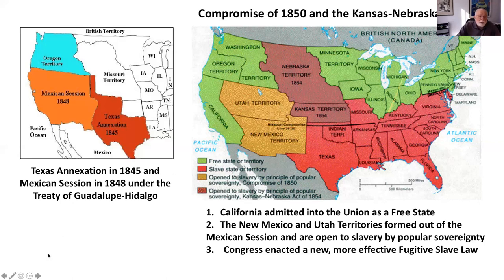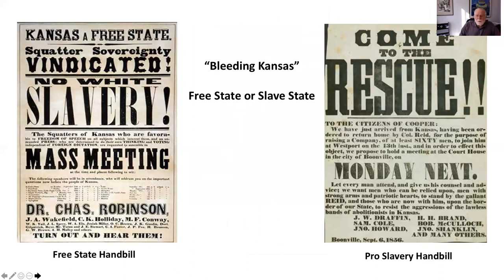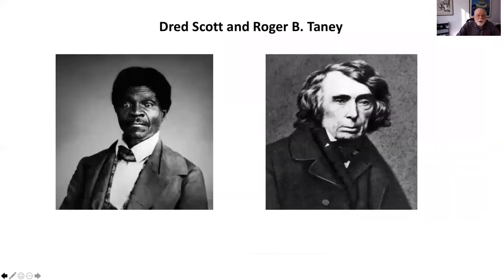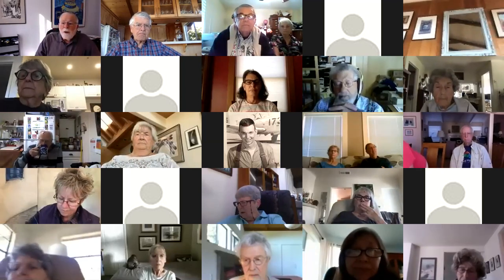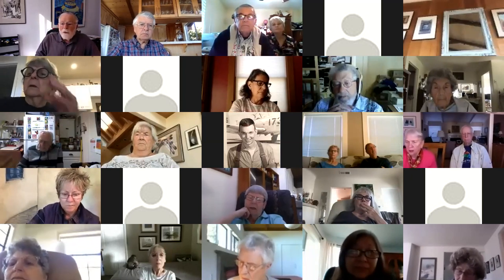The result of the Kansas-Nebraska Act was what came to be called Bleeding Kansas. Both free-state and pro-slavery handbills circulated during this period, and Kansas literally descended into a civil war. This is where matters stood when the Dred Scott case came to the Supreme Court in late 1855.